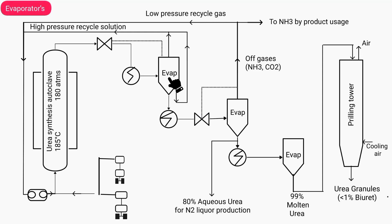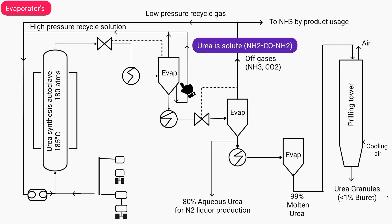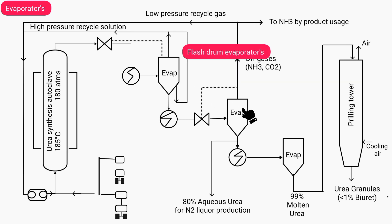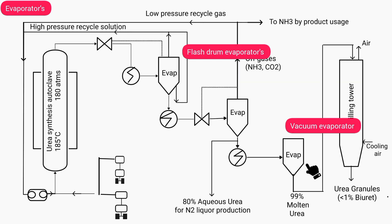These are evaporators — devices used in the process of evaporation. The concentration of the solute present in the solution is increased by the evaporator by removing the solvent. In this process, urea is the solute, while unreacted ammonium carbonate, ammonia, carbon dioxide, and water are the solvents. These are both flash drum evaporators, and this is a vacuum evaporator.